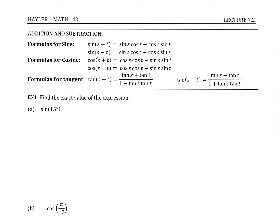Welcome to lecture 7.2. We now have some new formulas — these are the addition and subtraction formulas. We have formulas for sine, cosine, and tangent, the three main ones. There are definitely a lot going on, so make sure to carefully focus on the different aspects of them, and then we'll figure out what they're for in a moment.